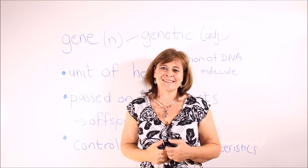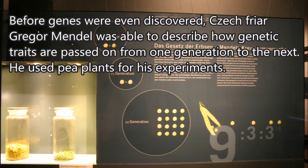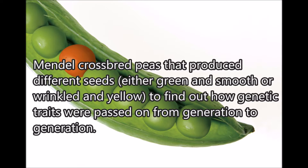Here are the sample sentences. Before genes were even discovered, Czech friar Gregor Mendel was able to describe how genetic traits are passed on from one generation to the next. He used pea plants for his experiments. Mendel crossbred peas that produced different seeds, either green and smooth or wrinkled and yellow, to find out how genetic traits were passed on from generation to generation.